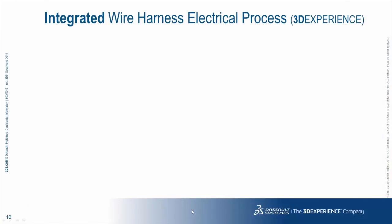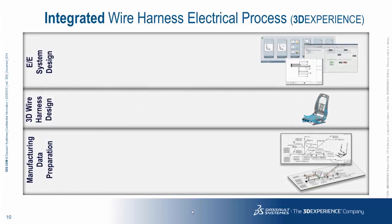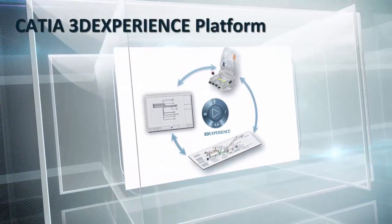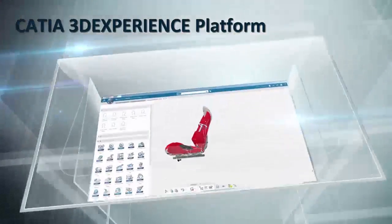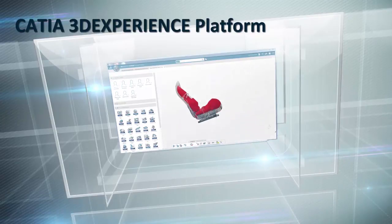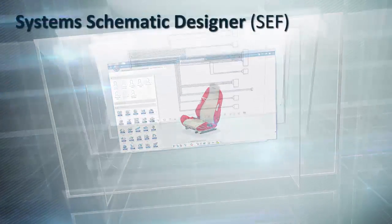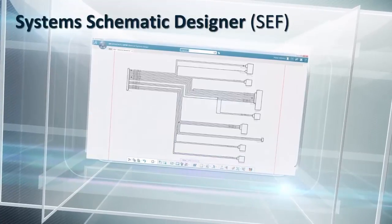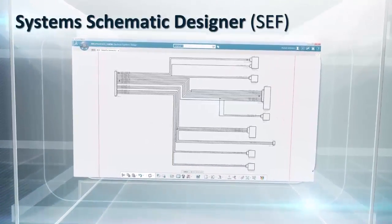Our strategic approach is to go beyond 3D design and manufacturing. We have implemented 2D schematic design tools very tightly integrated with the 3D wire harness design application to provide the complete process coming from schematic, going through the 3D harness design, to the fully integrated manufacturing solution available on the 3DEXPERIENCE platform. For the electrical roles now available in R2015X, first we have the CATIA 3DEXPERIENCE platform — a complete wire harness lifecycle management solution — and the systems schematic designer (SEF), which is an intelligent electrical systems design environment driving real-time concurrent design and collaboration across all disciplines.